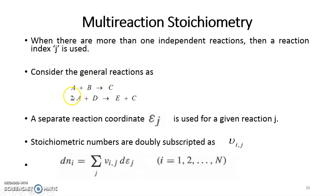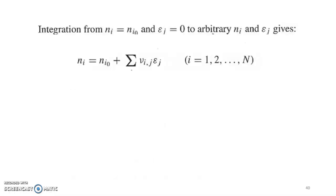For B, it will be only 1 times epsilon 1. For D, it will be 1 times epsilon 2. For C, it will be 1 times epsilon 1 plus 1 times epsilon 2. And for E, it will be only epsilon 2. Likewise, we can extend this to multi-reaction systems.